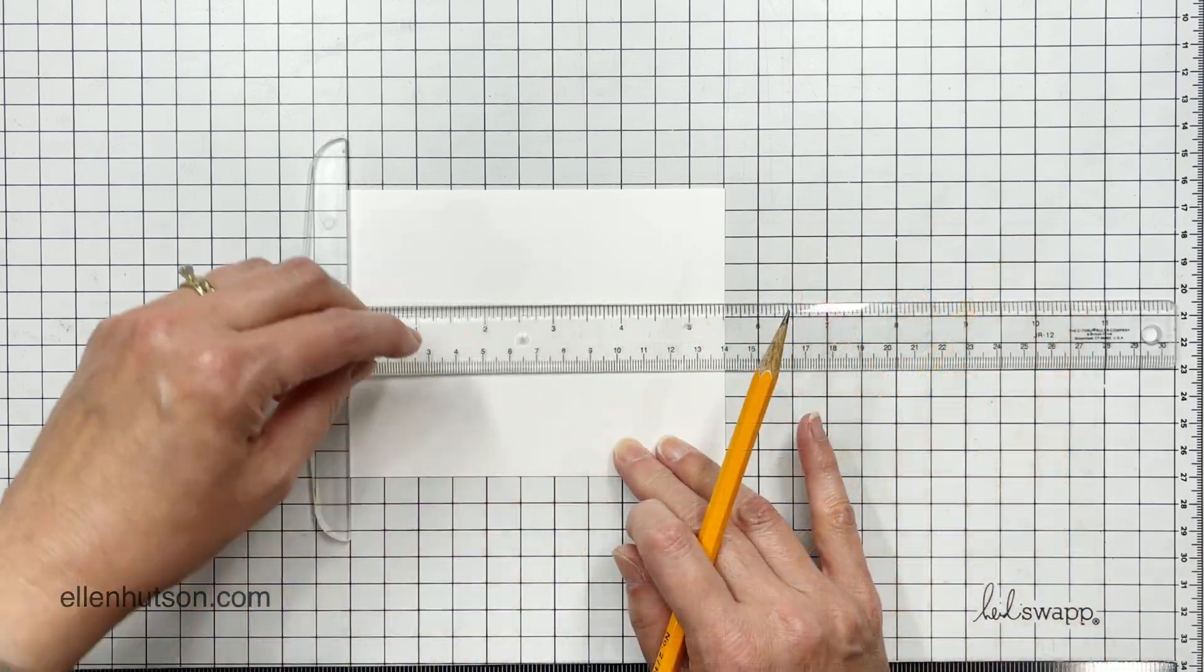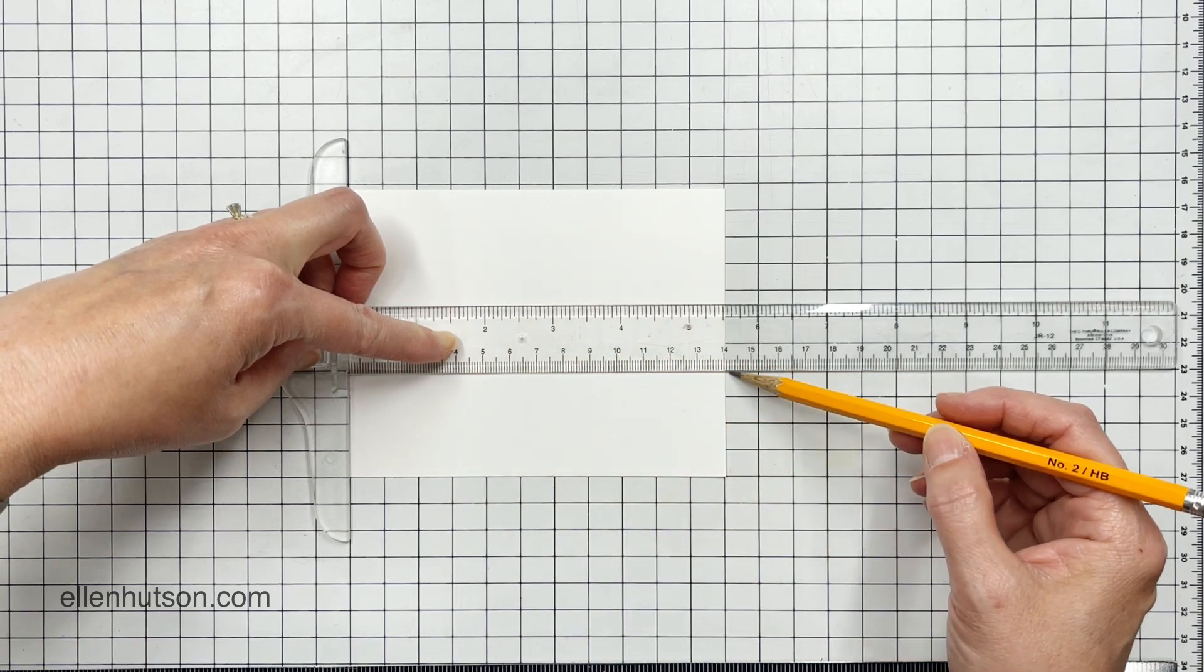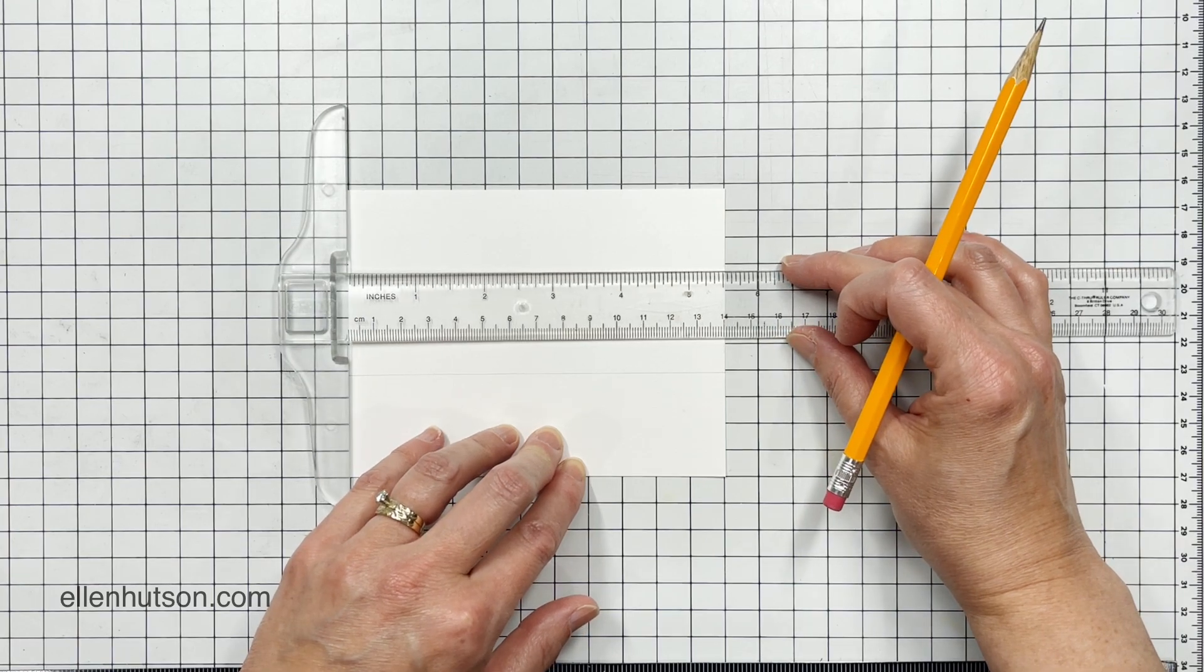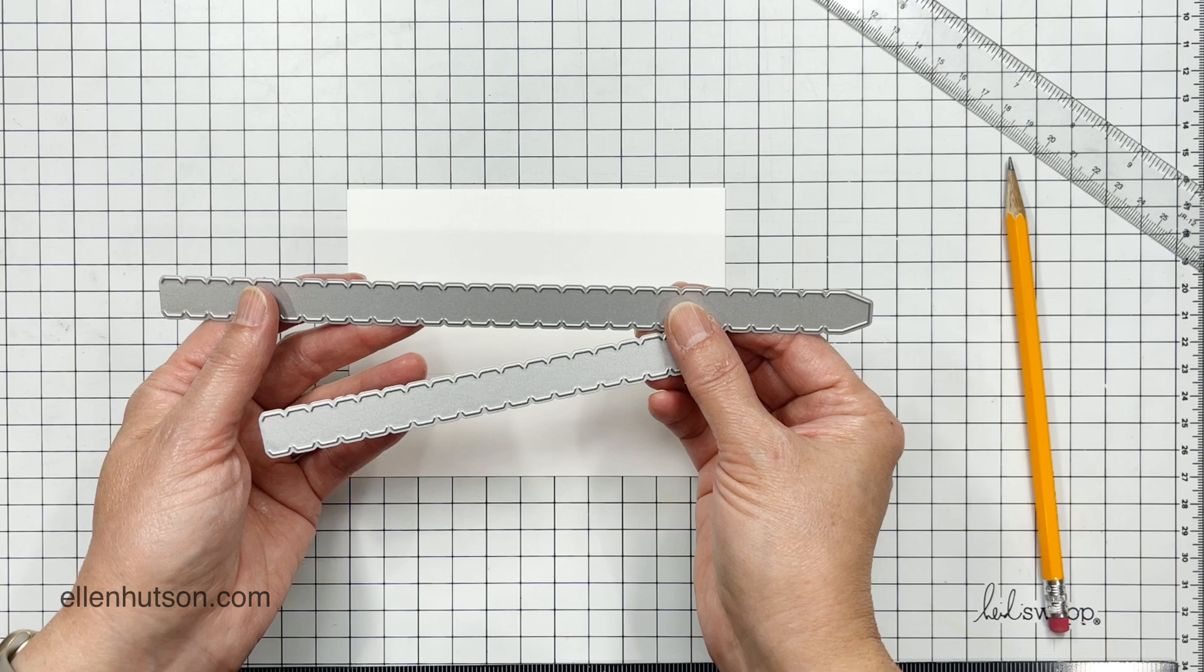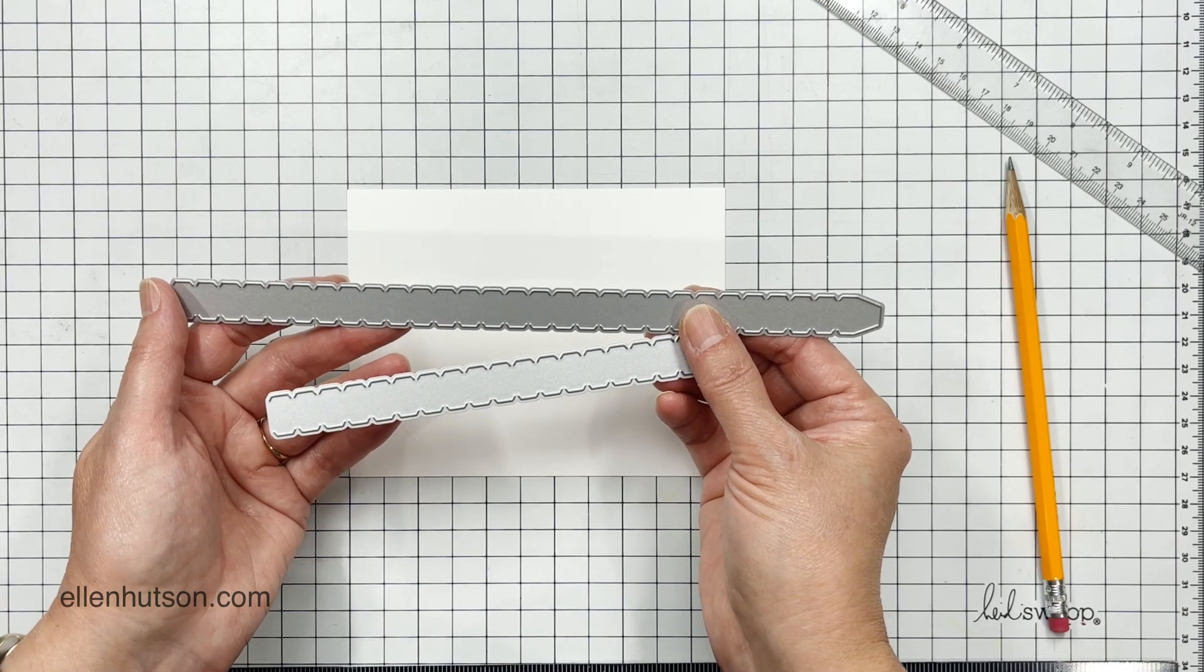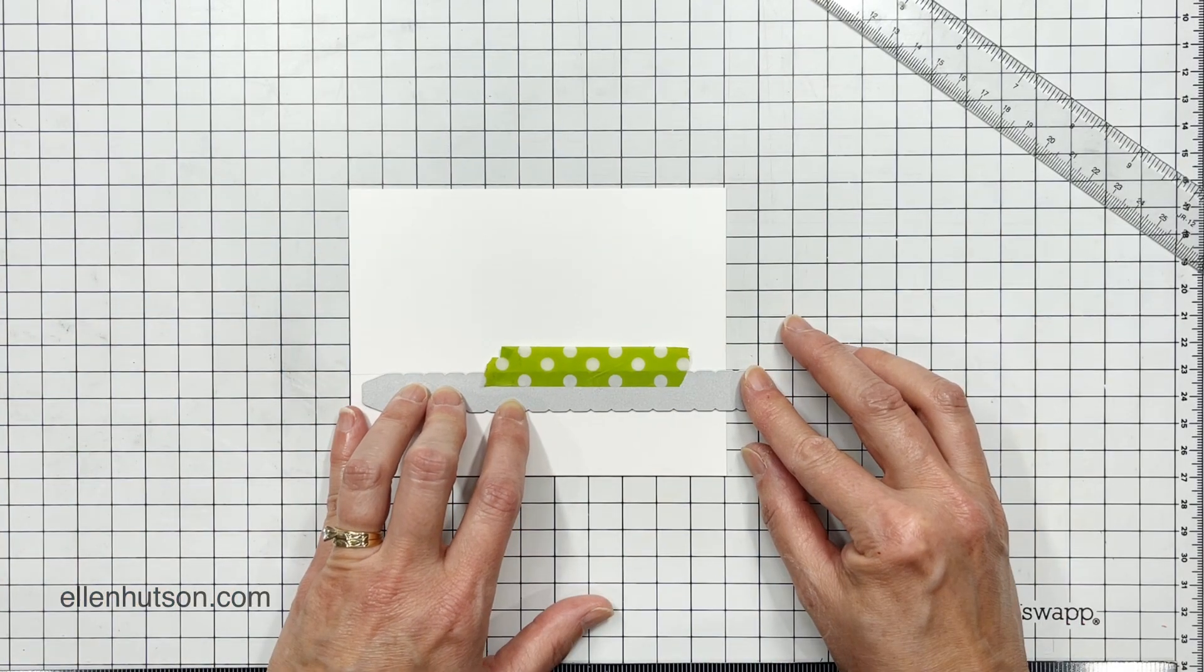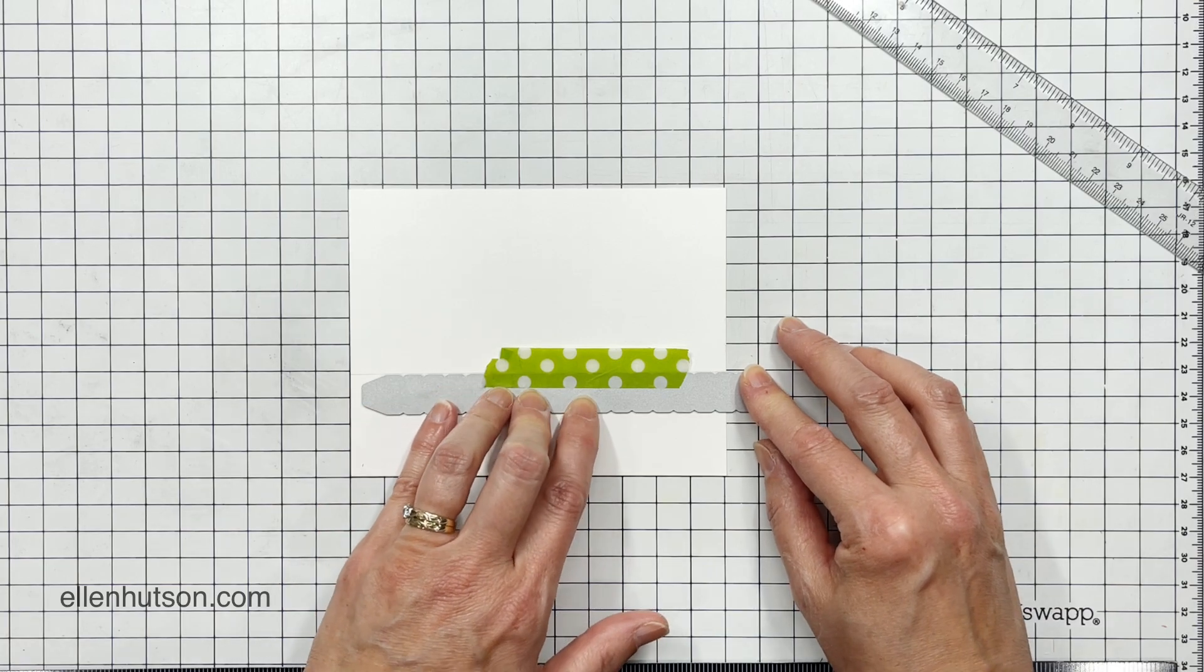So I've got two projects today. The first one's going to be a card, and I've started with a Neenah Solar White. This is a quarter sheet, and I'm using my T-square here to mark a channel very lightly with my pencil. It's about half an inch deep. Then I'm going to use one of these zipper dies. Now you can use the long one for those slimline cards, and then the smaller one works great for more of the A2 size standard cards.